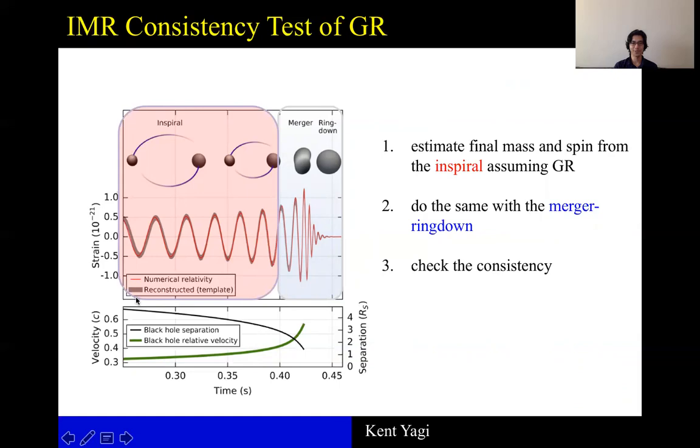And then for the inspiral portion, you estimate the final mass and spin, assuming GR is correct. Then you do the same for the merger-ringdown part, and you check the consistency between the two estimates.